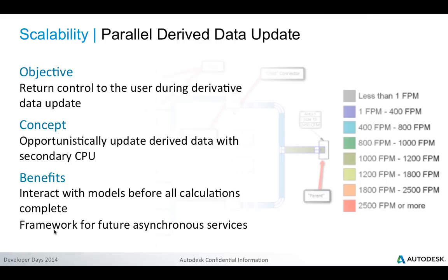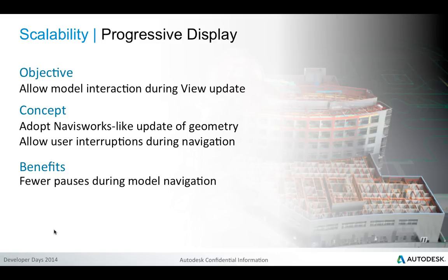Another area is the parallel derived data update. We want to be able to make use of secondary CPUs and multi-threading. The objective is to return control to the user immediately while derivative data is being calculated in the background, so the user can interact with the model before certain calculations complete. This system is implemented as a framework currently used for color fills, with plans to use it for future asynchronous services. A progressive display framework similarly allows interaction with the model during the view update.